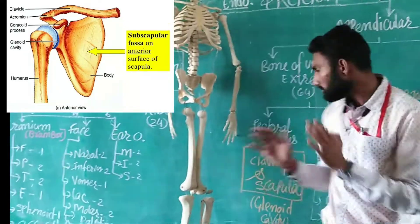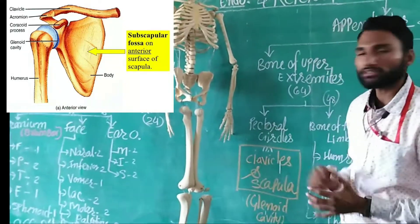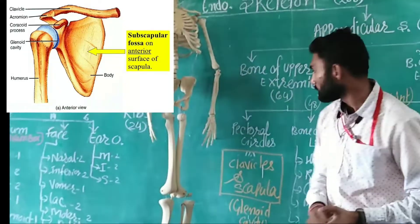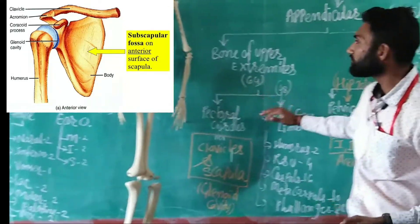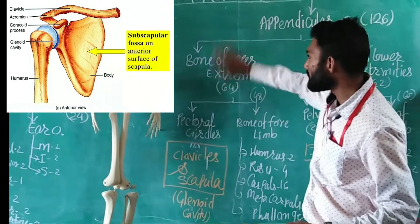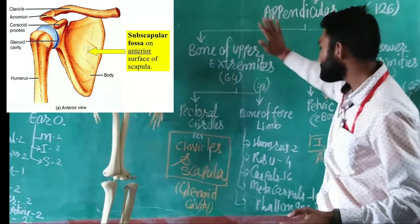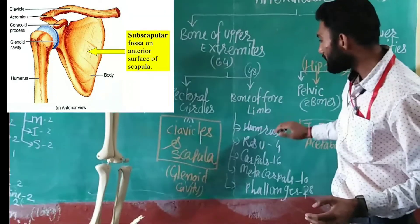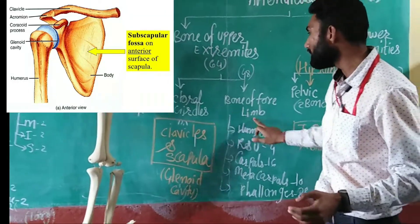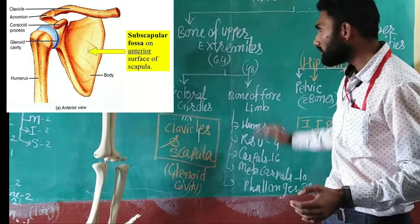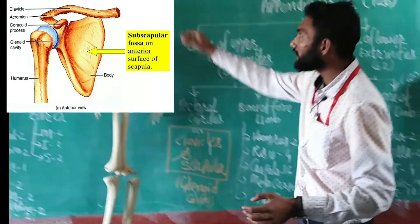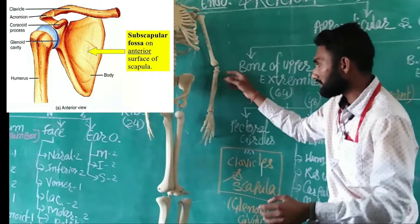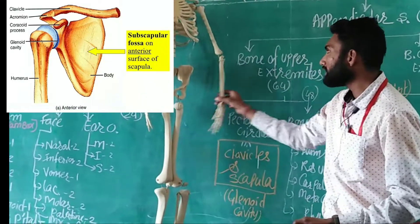We have to talk about the four limbs and the bones of the upper hand.